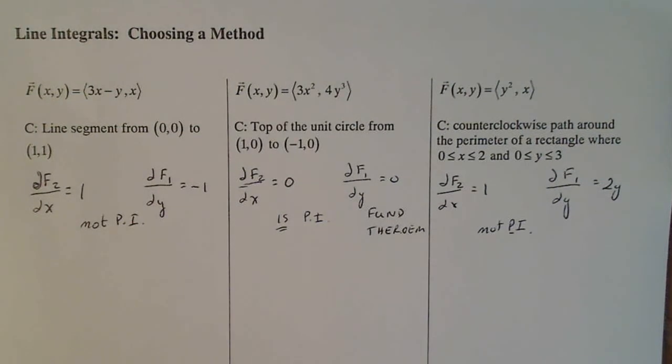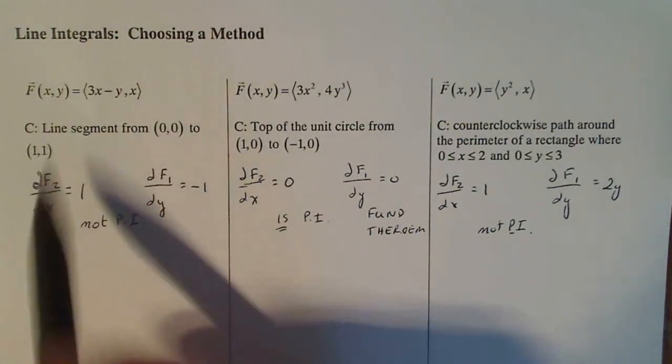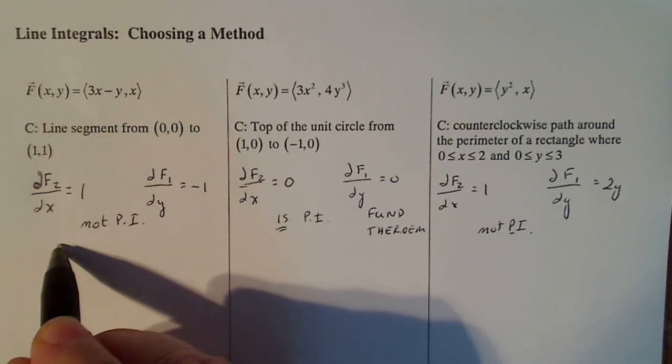Now the next one, since we can use the DT method on anything, what we're trying to do now is figure out if we can use Green's theorem on any of these. So when you're going to talk about Green's theorem, you actually have to talk about how C behaves. So I'm going to draw a picture of C in the two cases that I have left.